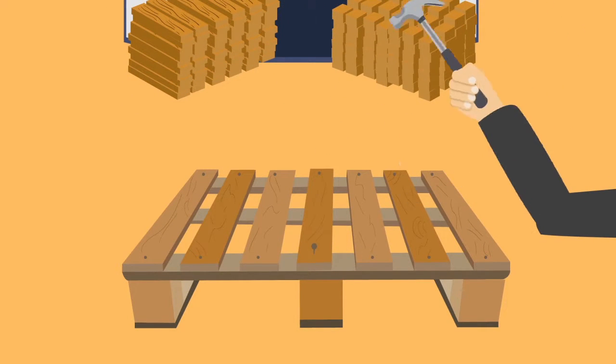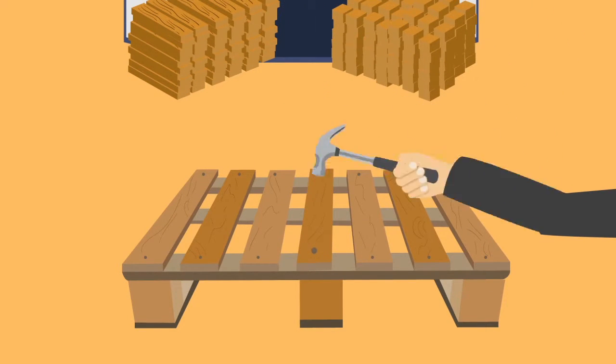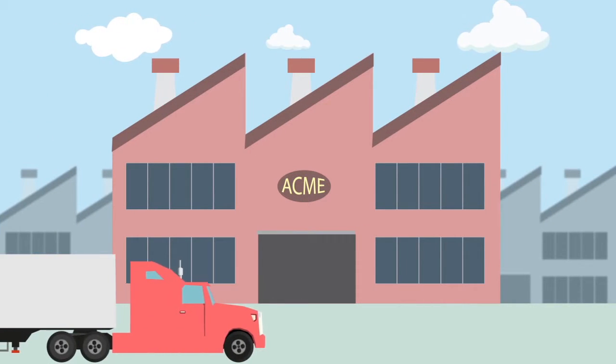The various components are joined by nails to give life to the wooden pallet. Once ready, it is transported to a factory where consumer goods are produced and here it begins its work.